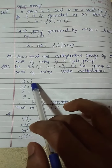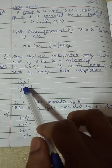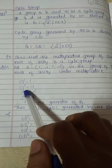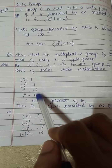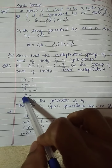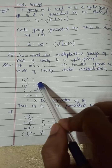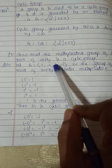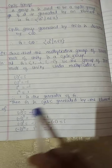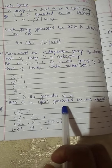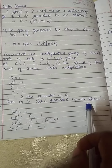Take i. i power 1 is i, i power 2 is -1, i power 3 is -i, i power 4 is 1. So i generates all the elements: 1, -1, i, -i. Therefore i is the generator of G, and G is a cyclic group generated by the element i.